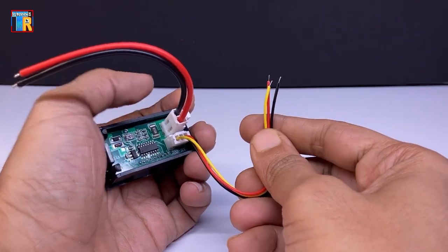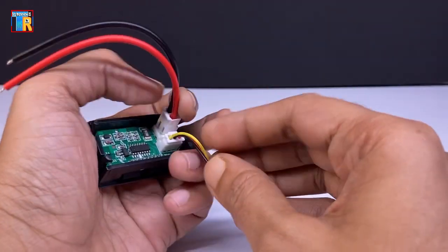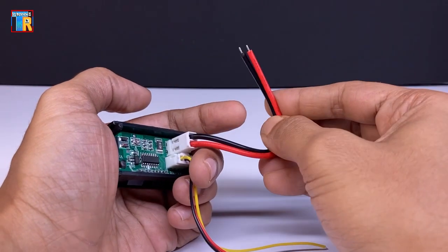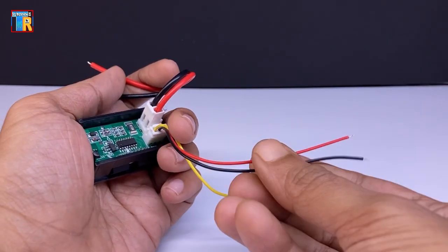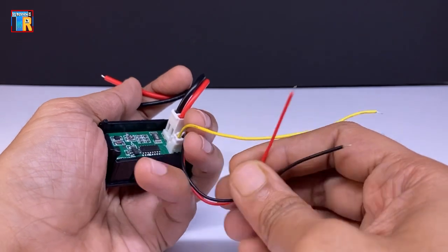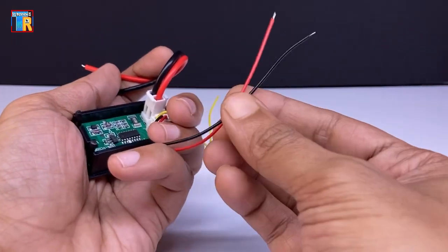These wires are used to power the module and measure voltage. These two thick red and black wires measure the current of the load. These red and black wires are for powering the module.